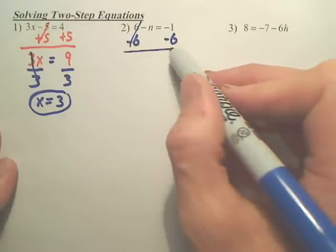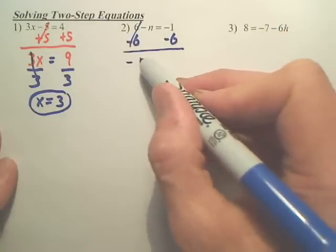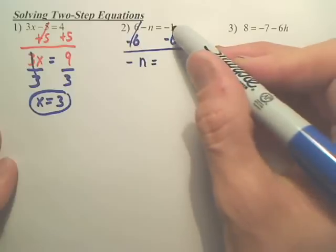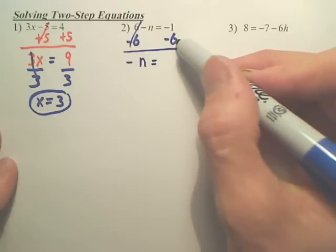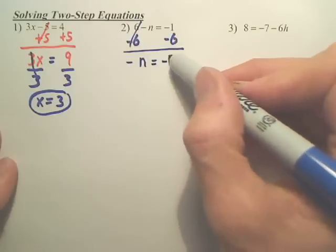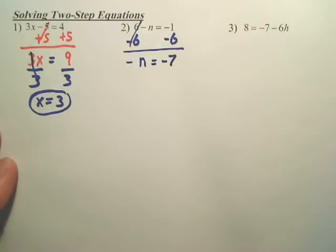That disappears, leaving you negative n. And negative 1 minus 6, or negative 1 and negative 6 is negative 7.